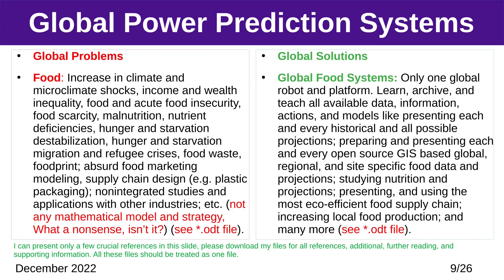Global Problem — Food: increase in climate and microclimate shocks, income and wealth inequality, food and acute food insecurity, food scarcity, malnutrition, nutrient deficiencies, hunger and starvation, destabilization, migration and refugee crises, food waste, food print, absurd food marketing modeling, supply chain design, etc. Global Solution — Global Food Systems: learn, archive, and teach all available data, information, actions, and models; prepare open-source GIS-based global, regional, and site-specific food data and projections; study nutrition and projections; present the most eco-efficient food supply chain, and many more.